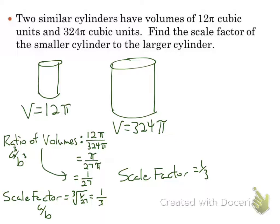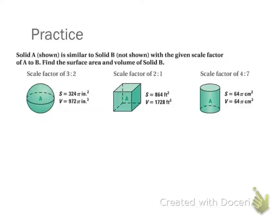It doesn't ask for it here. But let's find the ratio of the areas, just if we needed to. So if I had the ratio of the areas, I would square the scale factor. And that turns out to be 1 over 9. Maybe that's one we'd have to see later.